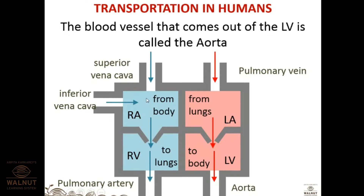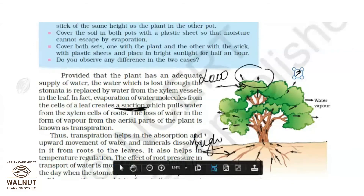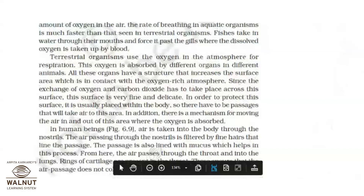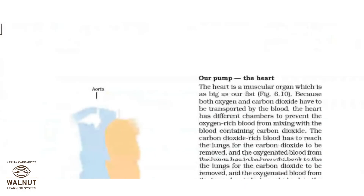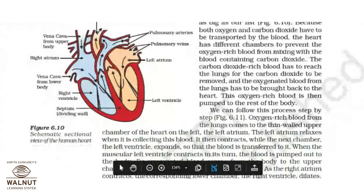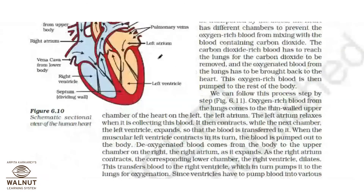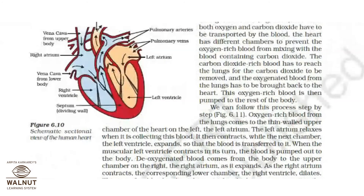To summarize the block diagram: superior and inferior vena cava bring deoxygenated blood from upper and lower body to the right atrium; pulmonary vein brings oxygenated blood from lungs to the left atrium. This schematic sectional view of the human heart matches what is given in the NCERT textbook.